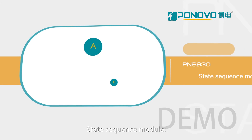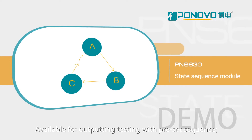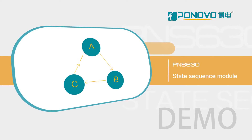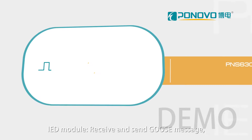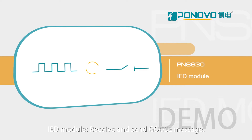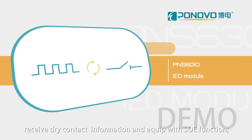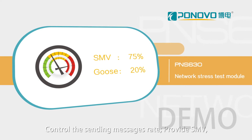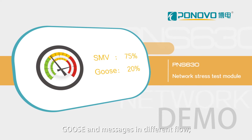The stage sequence module is available for output and testing with a pre-set sequence, with GOOSE replay shown as a test results list. The IED module receives and sends GOOSE messages and receives joint contact information with SOE function. The network stress test module controls the sending message rate and provides SMV, GOOSE, and messages in different flows.